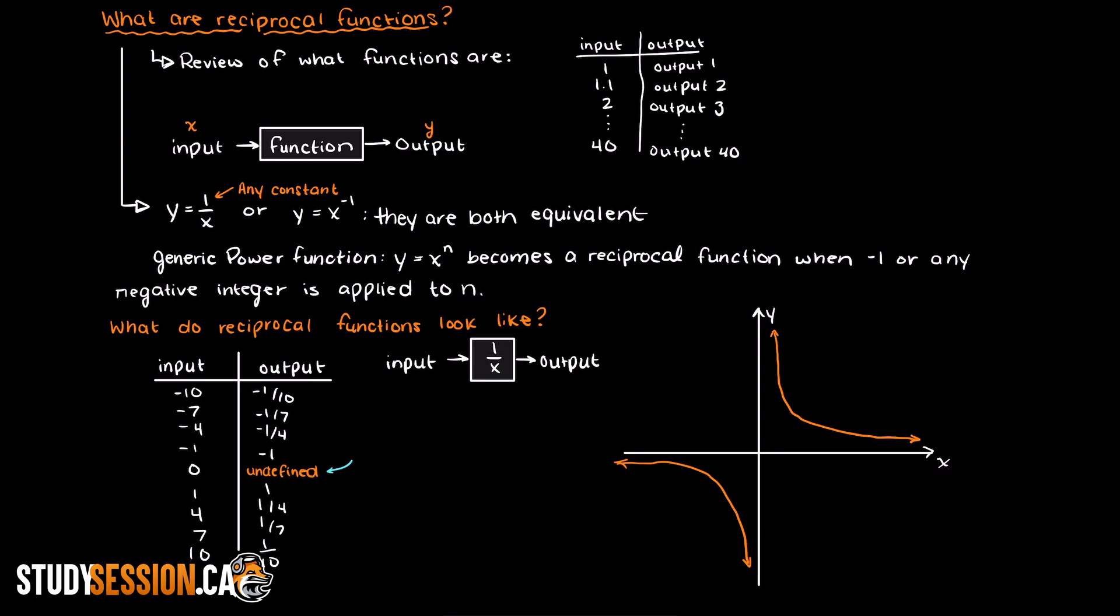An interesting thing about reciprocal functions is that they always have a horizontal and vertical asymptote, which essentially means that we have a line at x equals something and y equals something where our lines will never touch.